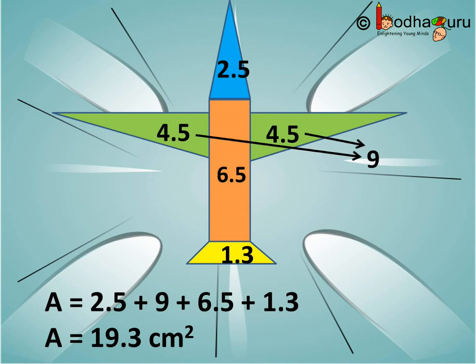We need to add the area of all the parts to get the final area. So, this is equal to 2.5 square centimeter, that is the area of the nose triangular in shape. The two side wings which are right triangles with area 4.5 square centimeter. So, we will add 9 square centimeter. The center rectangle is 6.5 square centimeter and the tail which is a trapezium is 1.3 square centimeter. So, this becomes equal to 19.3 square centimeter approximately.